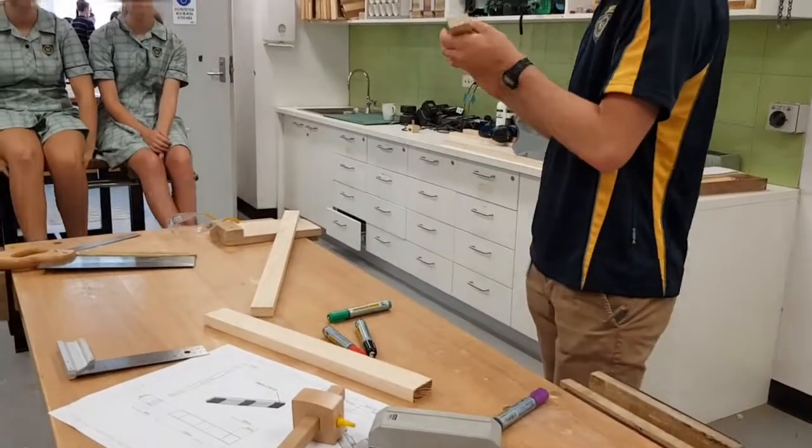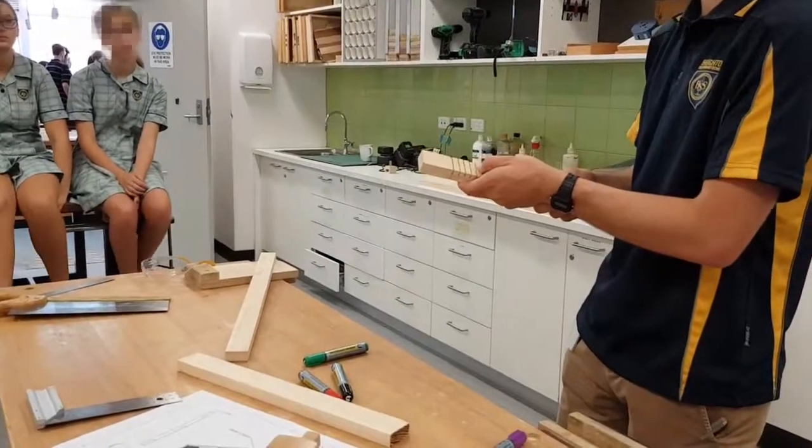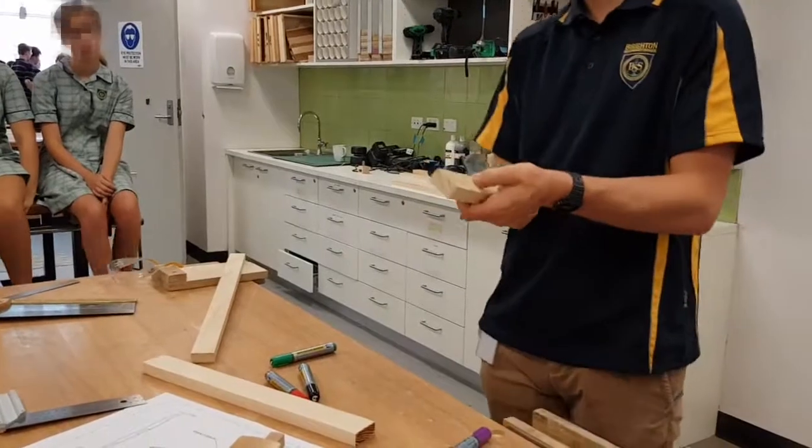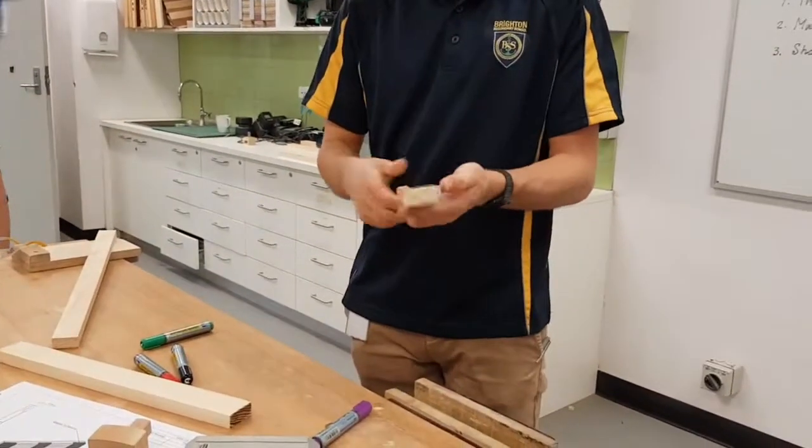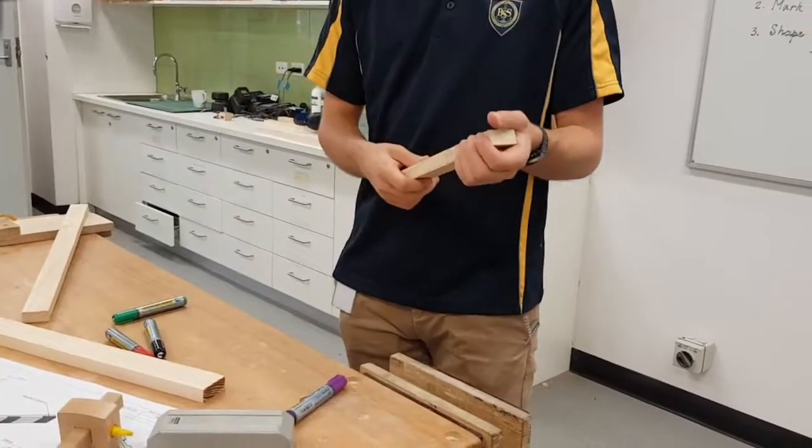So we've got these cuts down here, all right. The next step is to actually remove this material. The reason we put these cuts in is because they're called the relief cuts. What it does is it means it makes it easier to remove it in small chunks, not big chunks.